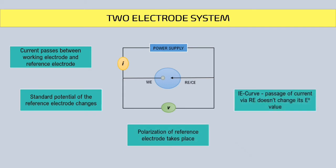This system can be used to derive IE curve, but only when the passage of current via RE doesn't change its standard potential value. In this case, the reference electrode itself acts as a counter-electrode. Hence, this system is better to develop electrochemical cells because of its greater efficiency.